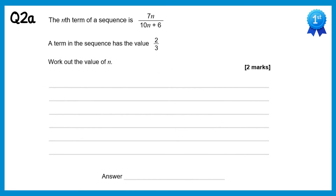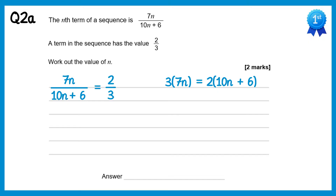For this question we want the nth term to be equal to 2 thirds. We cross multiply again and then expand the brackets: 3 lots of 7n is 21n, and expanding the bracket on the right gives 20n plus 12. Subtracting 20n from both sides gives n equals 12.